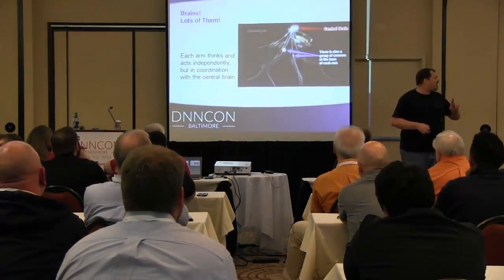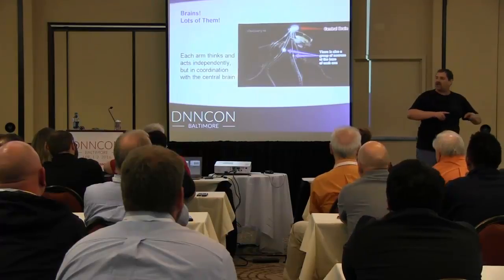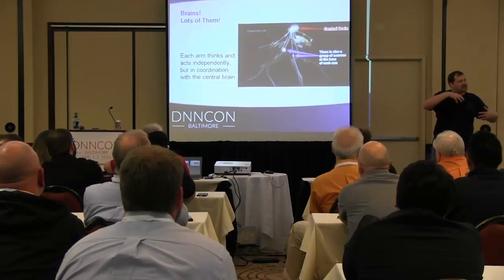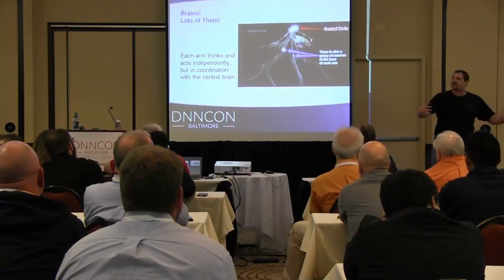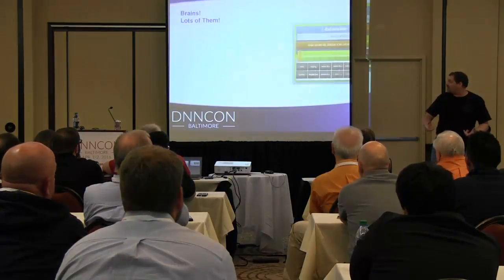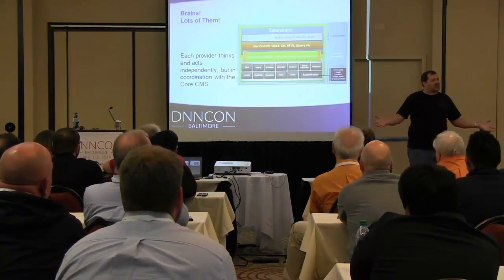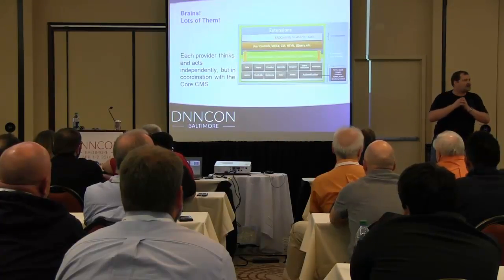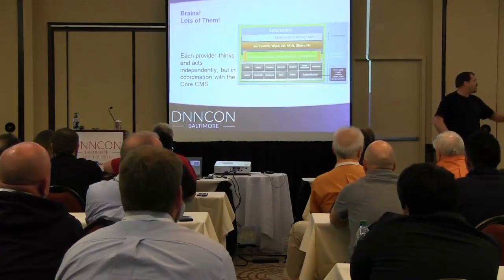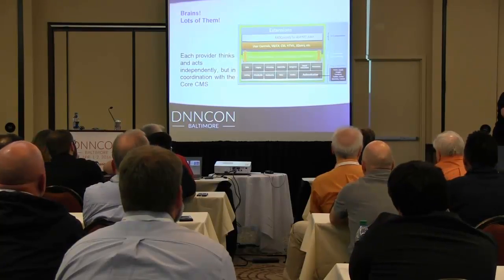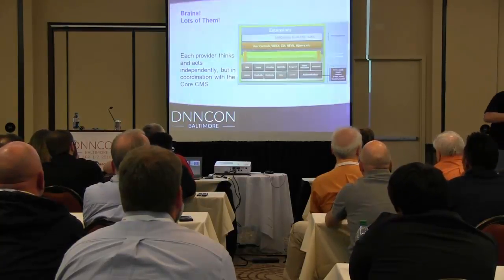Another cool thing about octopodes is that they actually have a separate brain for each arm. There's a master brain that issues controls, and then each arm will independently figure out how to achieve the task that the central brain identified. DNN does the same thing. DNN has its core libraries, and it goes out and says 'do this,' and then it has its entire suite of providers that independently figure out on their own how to do what they're supposed to do.